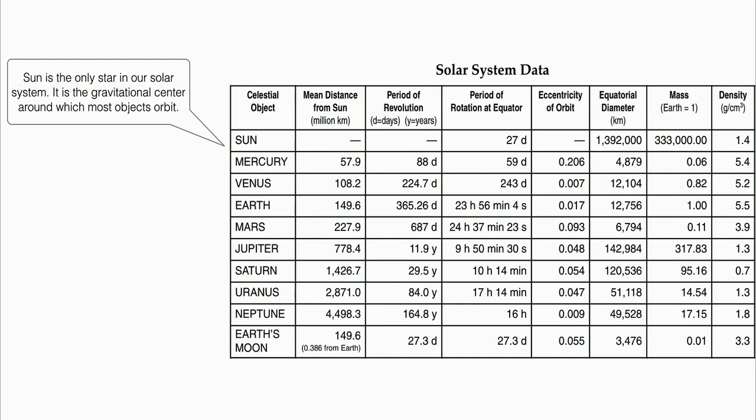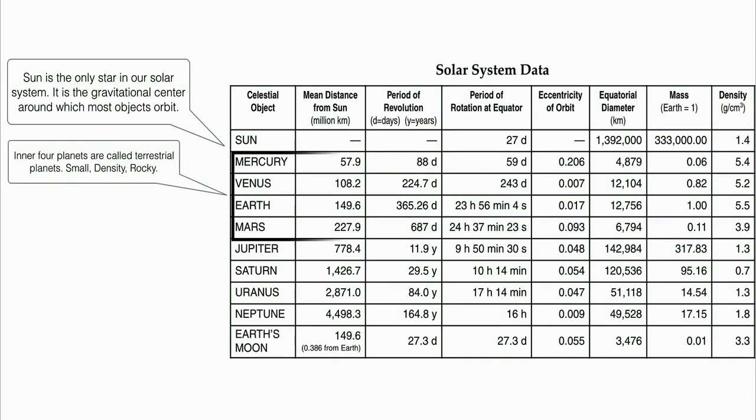The inner four planets are called terrestrial planets. They all have in common a high density. They are small, relatively speaking. They are dense, and they are rocky, meaning if we were to visit any of these planets, you would be able to walk on a rocky surface, very similar to Earth.